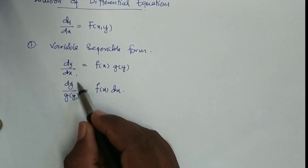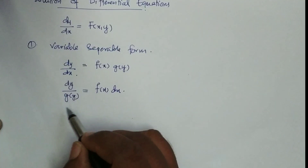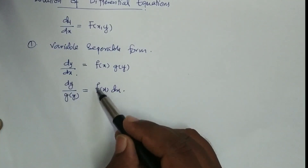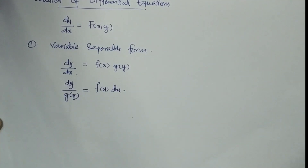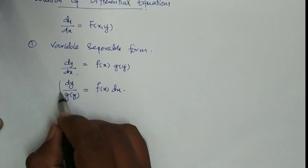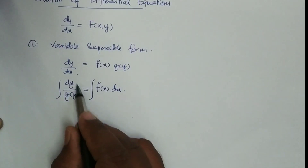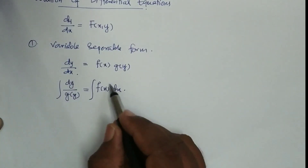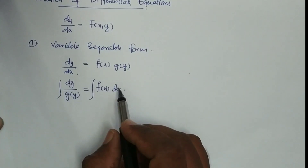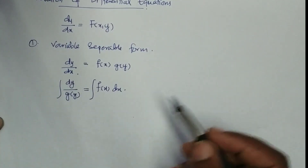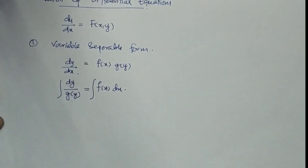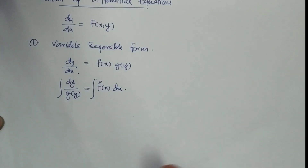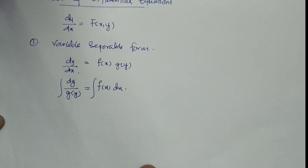On the y side we keep only the y function and dy, and on the x side only the x function and dx. Then we integrate both sides — with respect to y on the left and with respect to x on the right — to get the solution. This is called the variable separable method.